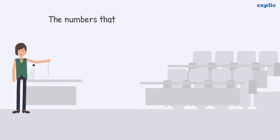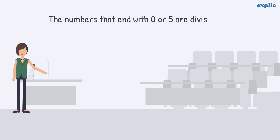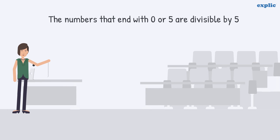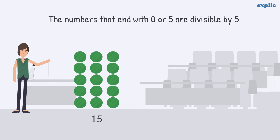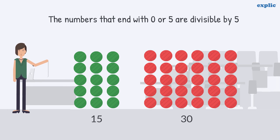The numbers that end with 0 or 5 are divisible by 5. For example, 15 and 30.